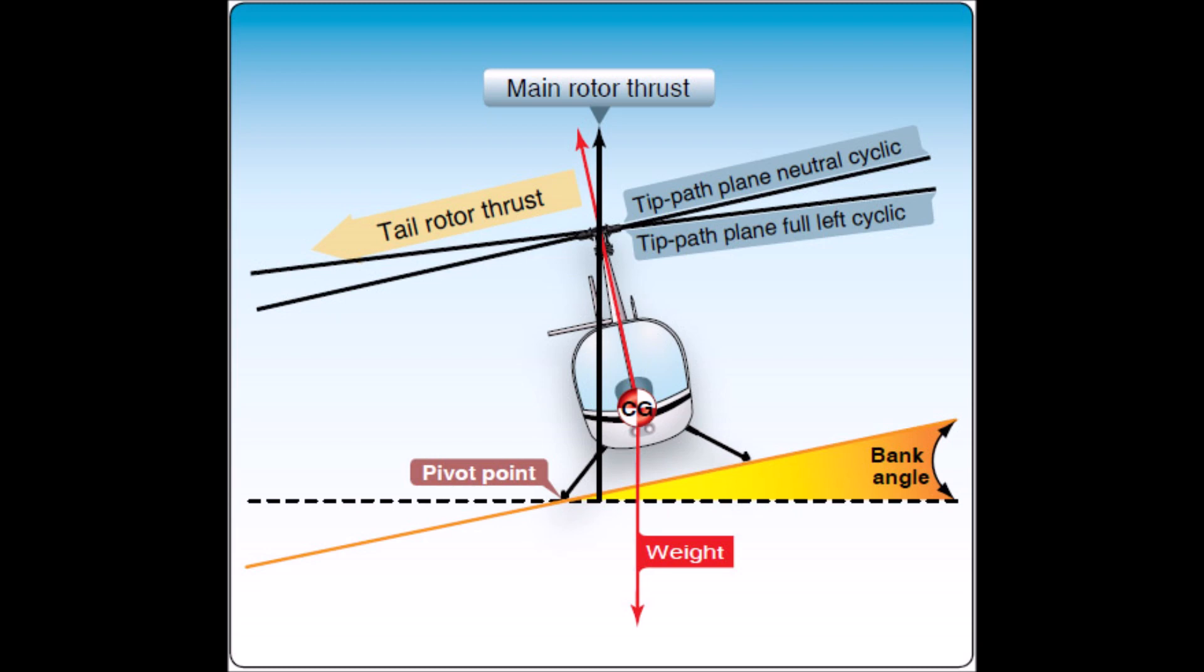And as that red arrow gets further and further away from the black arrow, our thrust, instead of being perpendicular to the main rotor or the helicopter, the helicopter has a horizontal component to it which pulls or rolls the helicopter over, causing you to enter into dynamic rollover.